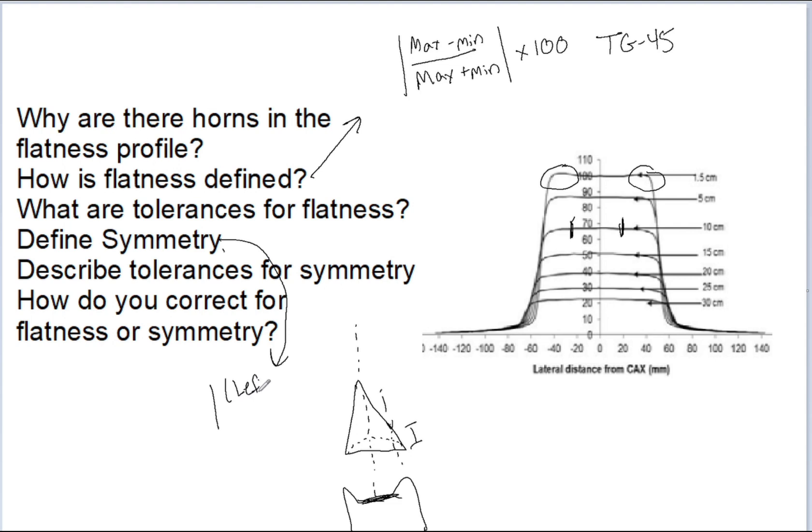For our clinic, we do the left value minus the right value, and that would be divided by the right value. All of that is in the absolute value. And you multiply that by 100. That will give you your symmetry.